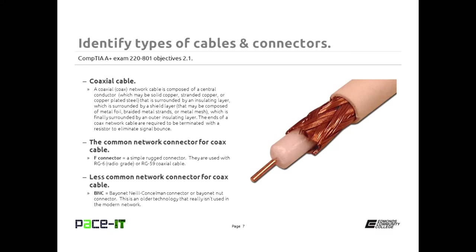Now let's move on to coaxial cable. A coaxial network cable is composed of a central conductor which may be made of solid copper wire, stranded copper, or steel wire that's been copper coated. It's surrounded by an insulating layer, which is surrounded by either a metal mesh or foil layer, which is finally surrounded by an outer insulating layer.